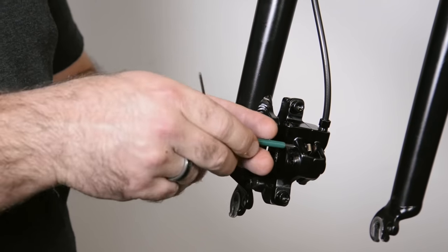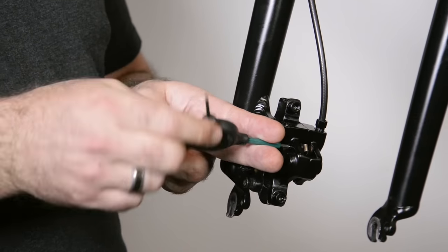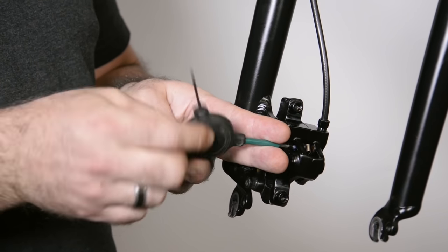Then remove the brake pads from the caliper and insert the bleed block with the pad retaining pin to hold it in place.